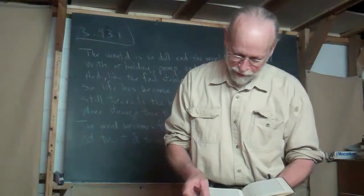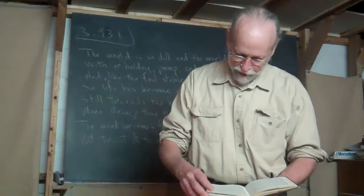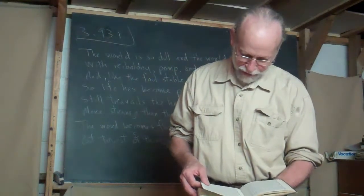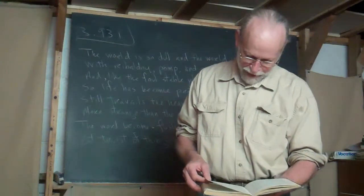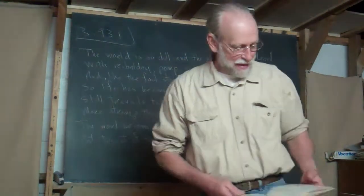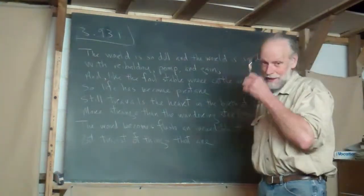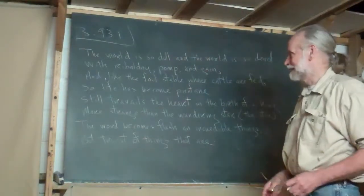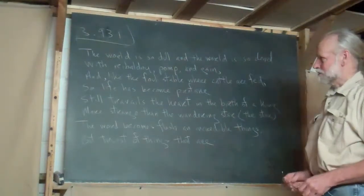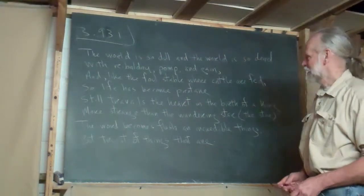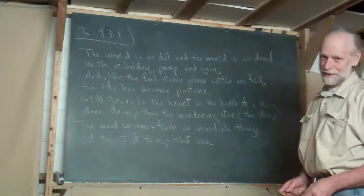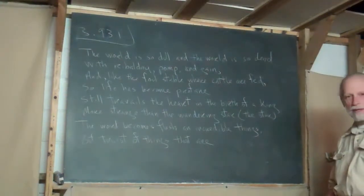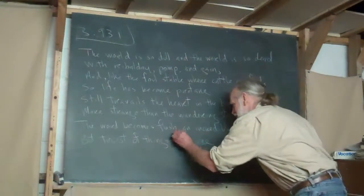The swift beating wings of the angels bring fear and scurry the sheep in fright. But glad of the honor are spirits who hear and seek for the better light. The awe-stricken shepherds with staff in their hands kneel down in the manger so dim, so dim. And worshiping kings from the orient lands find wonder and rest in him. And the third verse goes like this, and I think this is inspired. I don't care if this is a sort of a humble, common hymn or book. I think here he was inspired. The world is so dull and the world is so dead with ribaldry, pomp, and gain. And like the foul stable where cattle are fed, so life has become profane. Still travails the heart and the birth of a king, more strange than the wandering star. The star. The word becomes flesh, an incredible thing, but truest of things that are.